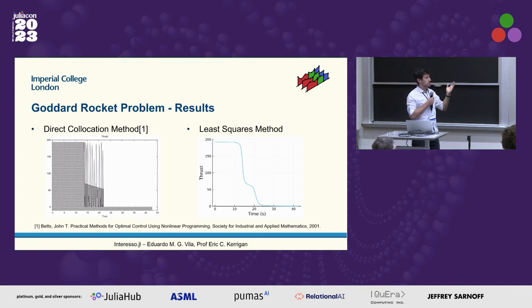Whereas if you take this least squares, which is an instance of the integrated residual approach, you end up with something more smooth and it's much more reliable. If you discretize this enough, it would closely resemble the analytical solution that we should have.